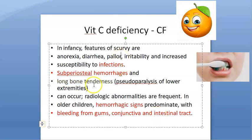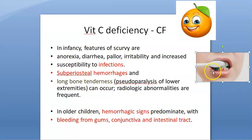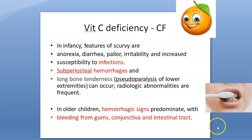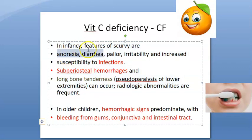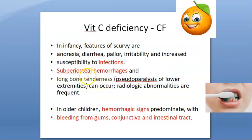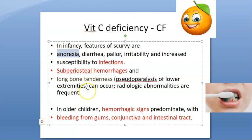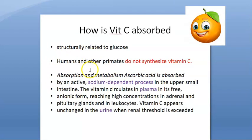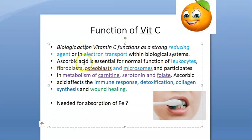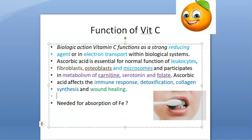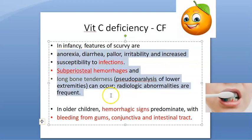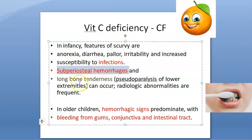This type of bleeding and hemorrhagic signs are seen mostly in older children. In babies you will see anorexia and diarrhea. Overall: GIT issues, infections, subperiosteal hemorrhage, and long bone tenderness.